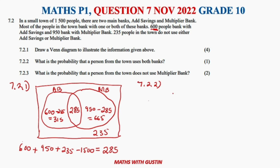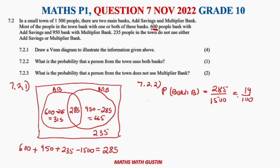Question 7.2.2: what is the probability that a person from the town uses both banks? This is given by the intersection divided by the total: 285 divided by 1500, which equals 19 over 100. That's the probability of a person using both banks.